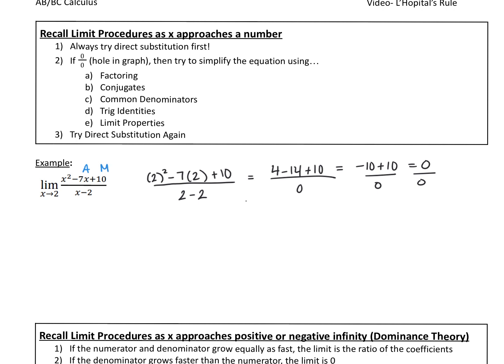Let's A and M this. The factors that add to negative 7 and multiply to 10 are (x minus 5) and (x minus 2). And the denominator is (x minus 2). So taking the limit as x approaches 2, these will cancel, which is what we want. Now I can directly substitute back in. Since x is 2, we get 2 minus 5, so the answer for this limit is negative 3.